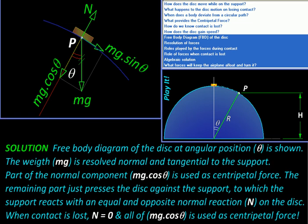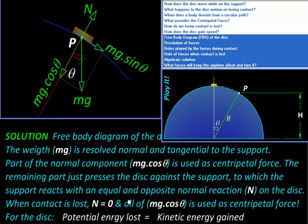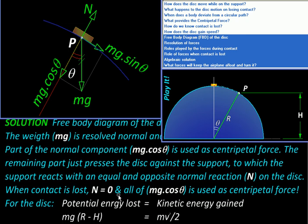So we have discussed all the physical interactions involved in this problem. Now we will start with the calculations. We start by first equating the potential energy lost by the disc to the kinetic energy it gains. The potential energy lost will be mg into the loss of height.